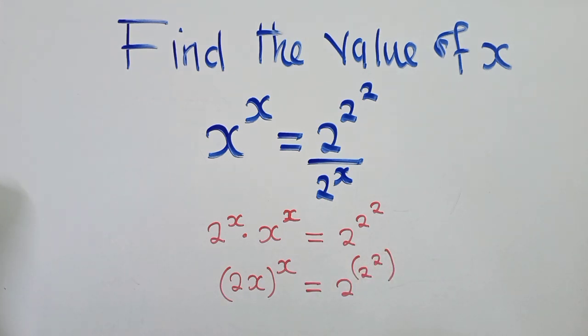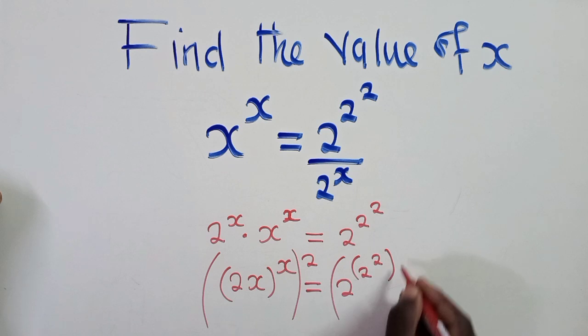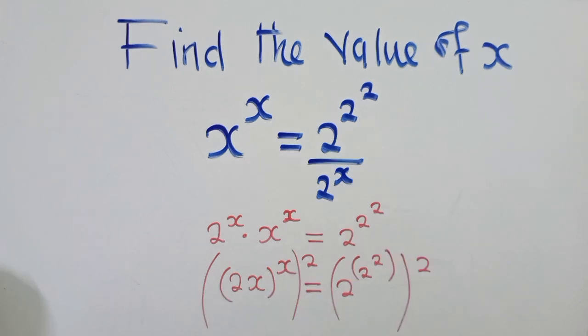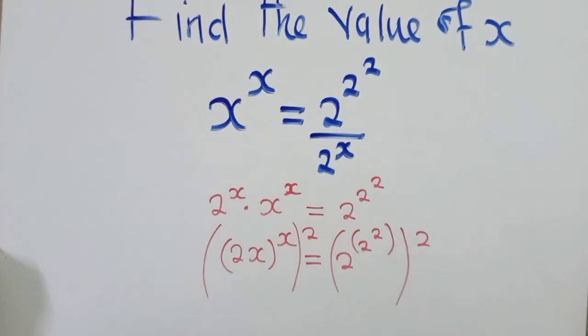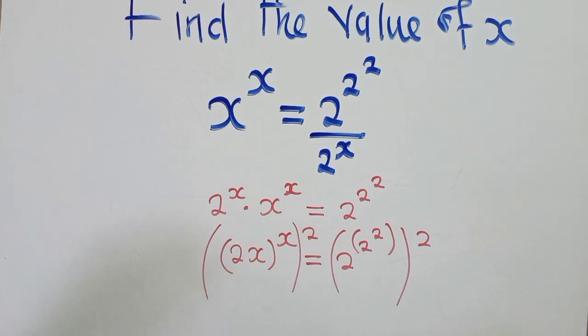Okay, so now from this stage, we can apply a power 2 to both sides, here and also here. So after applying that power 2, that means this power will be multiplied by this power. So we shall have a 2x here.